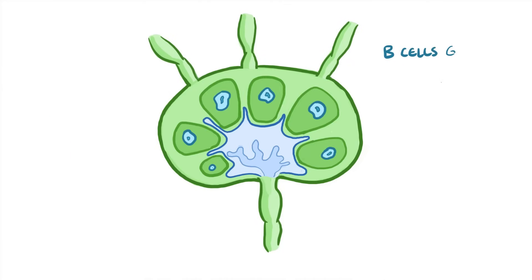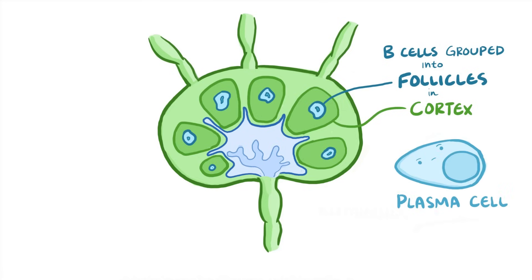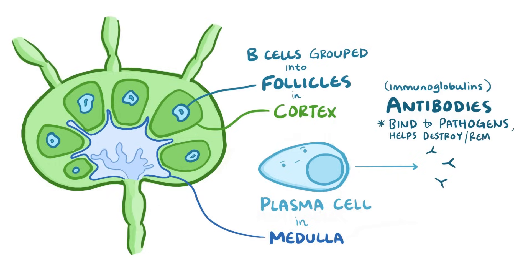Each lymph node has B cells which group together in follicles in the cortex, or outer part of the lymph node, along with T cells in the paracortex just below the cortex. B cells differentiate into plasma cells, which are found in the medulla, or center of the lymph nodes. Plasma cells release antibodies, or immunoglobulins, which bind to pathogens like viruses and bacteria to help destroy or remove them.